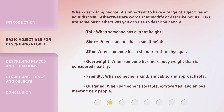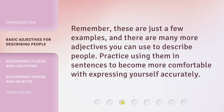Outgoing — when someone is sociable, extroverted, and enjoys meeting new people. Remember, these are just a few examples, and there are many more adjectives you can use to describe people. Practice using them in sentences to become more comfortable with expressing yourself accurately.